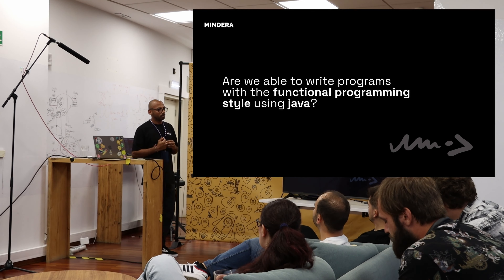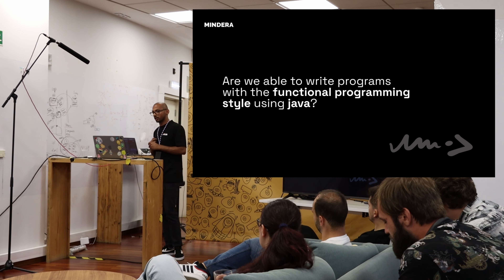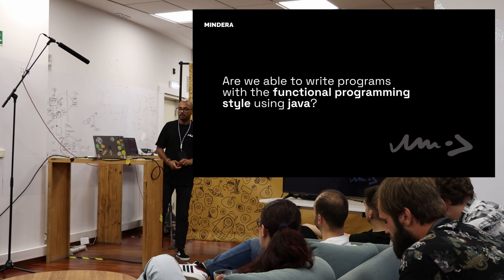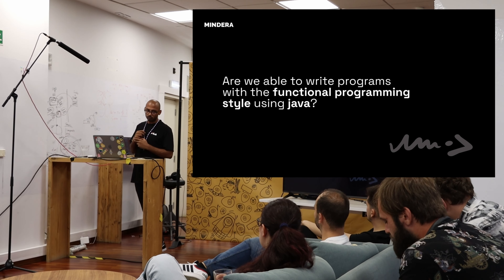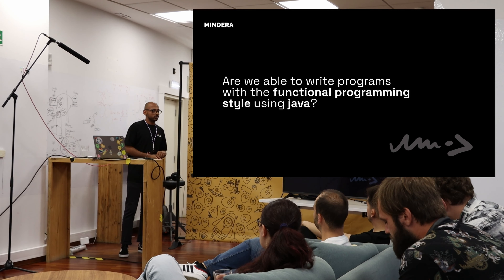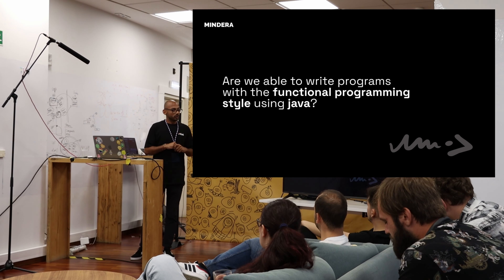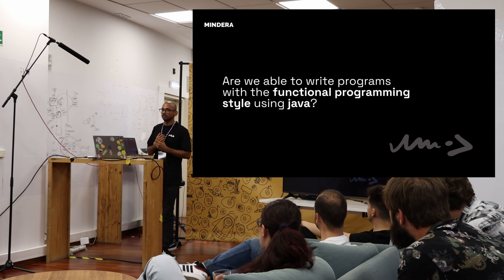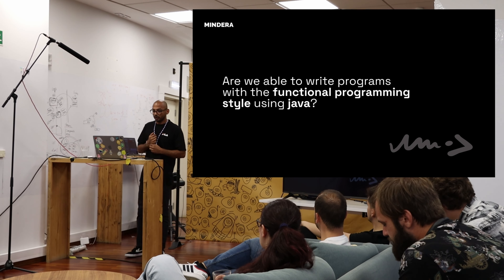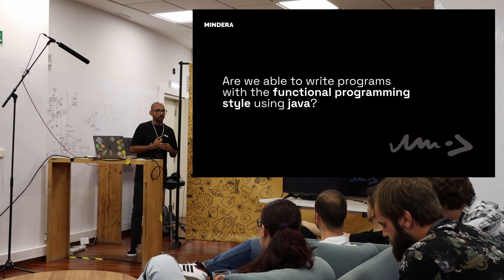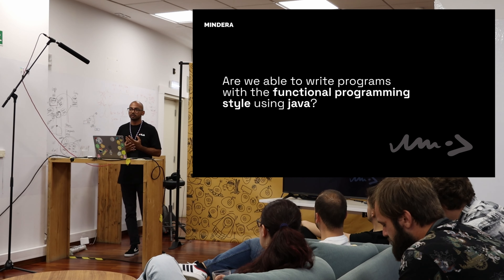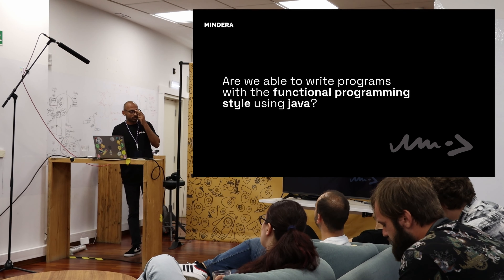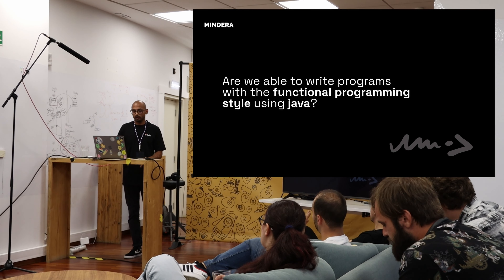Functional programming is about immutability and composing functions — all other aspects derive from these two. One of the main aspects is that functions are deterministic and have no side effects: for the same arguments, the function always returns the same result, and the function does not change anything outside its own scope. Java has evolved since version 8 providing many capabilities for functional programming: Stream API, lambda expressions, functional interfaces (added in Java 8), and more recently switch expressions and record classes, which allow defining immutable types by default.